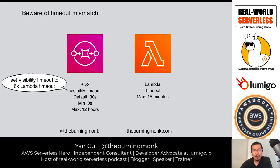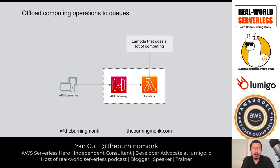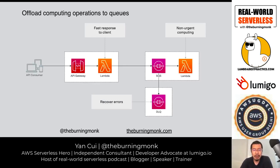If you set your Lambda timeout to 30 seconds, the SQS visibility timeout should be three minutes. A common pattern when you have an API doing heavy computation that might exceed 29 seconds is, instead of doing work immediately, to accept the request and push it into a queue. Then have SQS trigger a Lambda function to process it in the background, where it can take up to 15 minutes — and you don't care because it's happening behind the scenes.